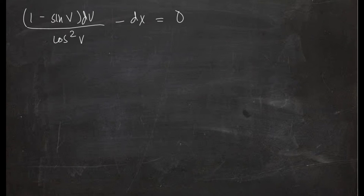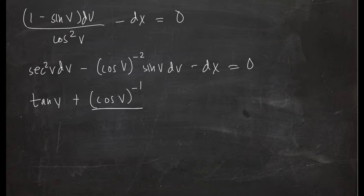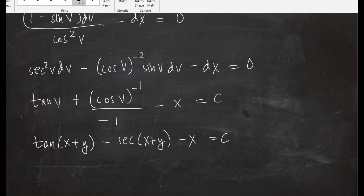Distributing cos²v, we get sec²(v)dv - sin(v)cos⁻²(v)dv - dx = 0. Integrating: the first term gives tan(v), and the second term by power rule (since d/dv[cos v] = -sin v) gives cos⁻¹(v)/(-1) = +sec(v). So tan(v) + sec(v) - x = c. Substituting v = x + y: tan(x + y) + sec(x + y) - x = c.